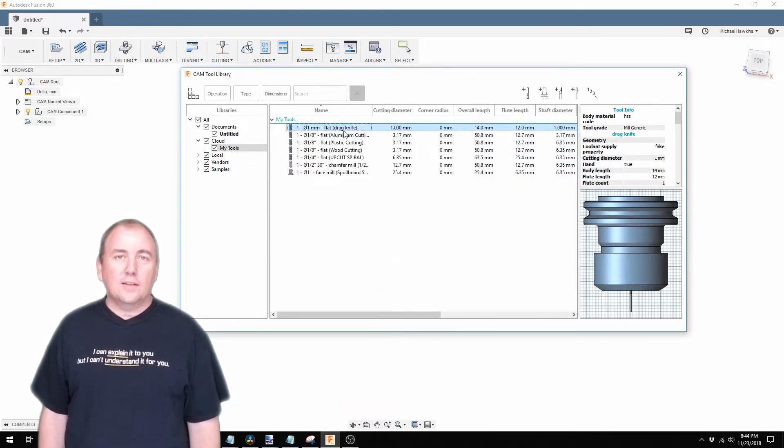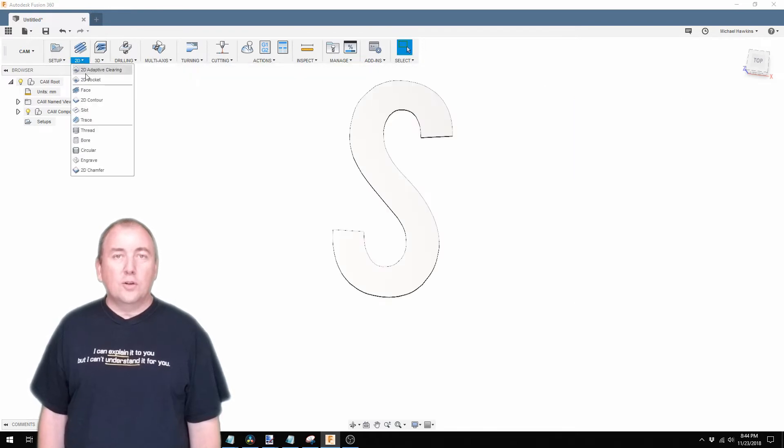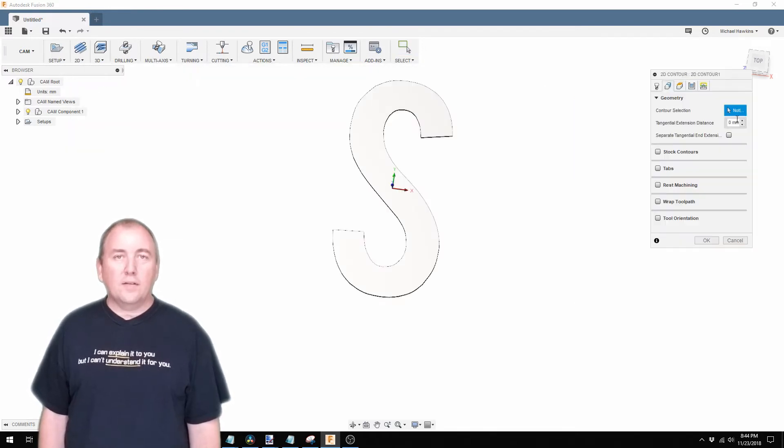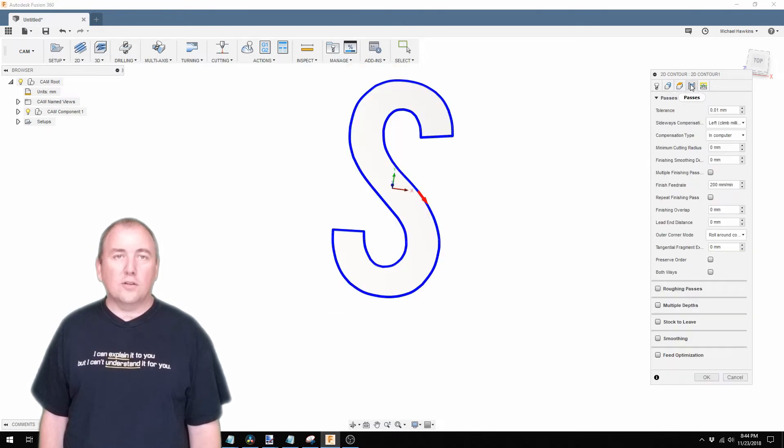Once I have my tool created and selected I created a new 2D contour path and selected the outline of the letter model as the contour for geometry. On the passes tab I made sure there was only one pass for this cut. I also made sure the outer corner mode was set to roll around corner. We do not want the CNC lifting the blade when cutting the corners.